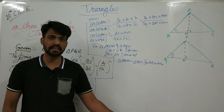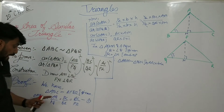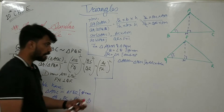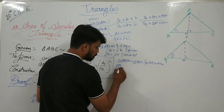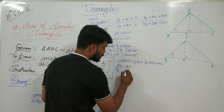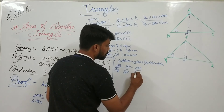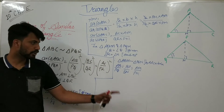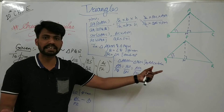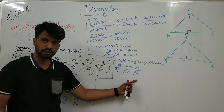Since triangle ABM is similar to triangle PQN, their corresponding sides are in equal ratio. Therefore: AB/PQ = BM/QN = AM/PN. I will use the relevant part: AB/PQ = AM/PN. This means AM/PN is equal to AB/PQ.